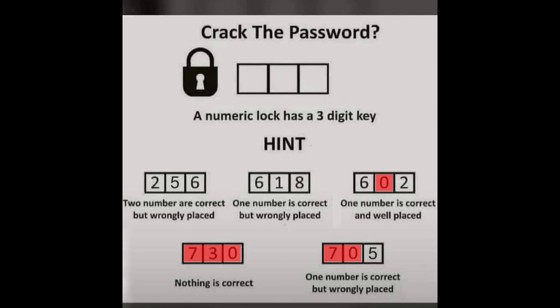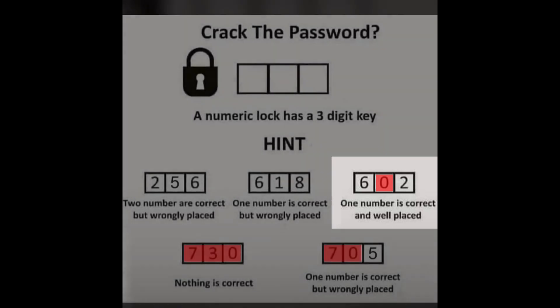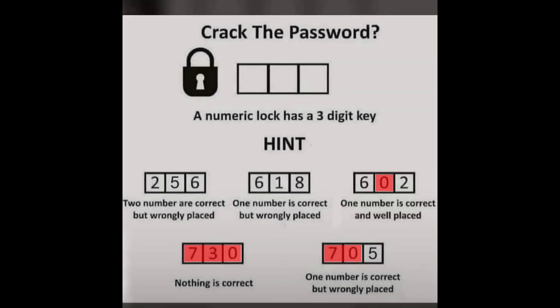Now looking at the first hint, we have one correct number and in the correct place. This means it could be either number two or number six. If we assume that number six is the correct number and go to the second hint that says one correct number but not in the correct place.